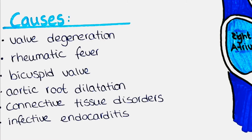Another cause is the congenital bicuspid aortic valve. Usually the aortic valve has three leaflets, but in some patients the aortic valve only has two leaflets. This anomaly can become prone to regurgitation over time.